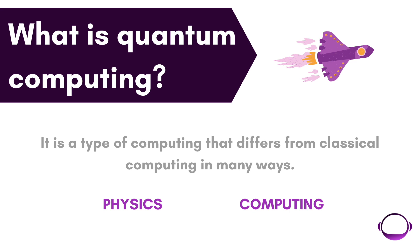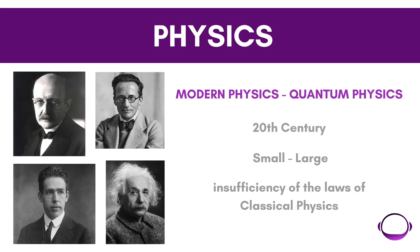Let's talk about physics and computing. At the beginning of the 20th century, the impressive work of Albert Einstein, Max Planck, Niels Bohr, Schrödinger and many others managed to give us a new image of nature — what we know today as modern physics or quantum physics. These discoveries revealed the insufficiency of the laws of classical physics when applied to the smallest or largest world: the atom and the universe, leading scientists to rethink a new form of physics.